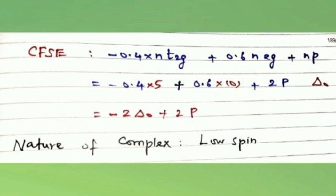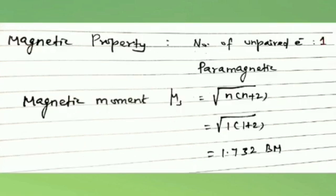The nature of the complex is a low spin complex because this ligand is a strong ligand. For the magnetic property, in this complex there is one unpaired electron. Therefore it is paramagnetic in nature. The magnetic moment μ = √[n(n+2)] = √[1(1+2)] = √3 = 1.732 BM.